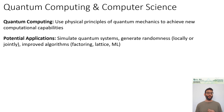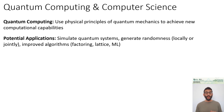Another aspect is designing improved algorithms for certain computational problems. Perhaps the most famous example is Shor's factoring algorithm, which allows solving in quantum polynomial time a problem that classically we do not know how to solve polynomially. The same holds for the discrete logarithm problem.